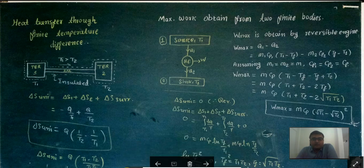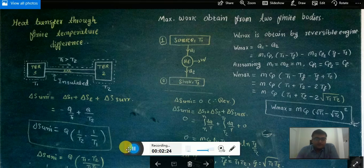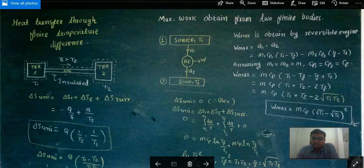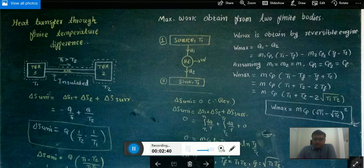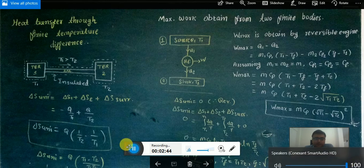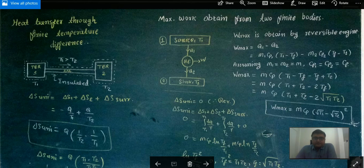Now, maximum work obtainable from two finite bodies. Here, one finite body is a source at temperature T1 and one body is at temperature T2. The maximum work obtainable from a reversible engine, where work is equal to Q1 minus Q2. The work obtained is equal to Q1 minus Q2, and Q1 and Q2 are given by the equation M·Cp·delta T.